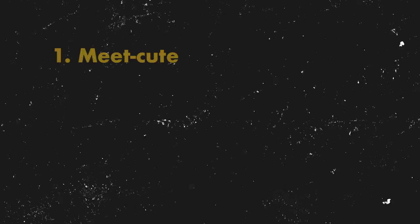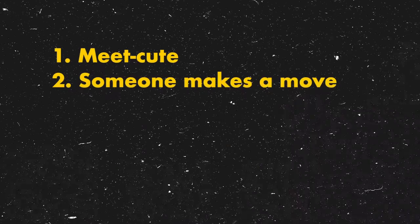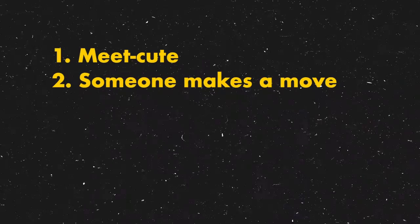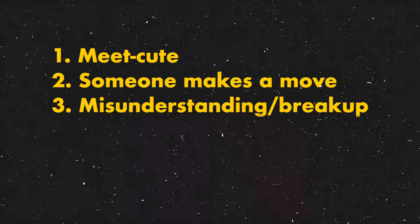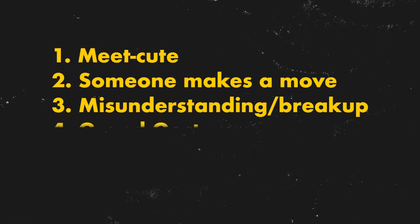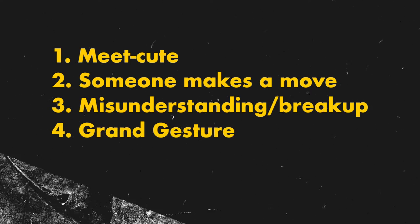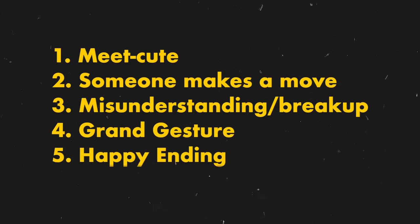Notting Hill was a romantic comedy released in 1999. Back then, there was a pretty standard structure for your average romantic comedy, and it looked something like this: there was the meet cute, one of them made a move, there was some sort of misunderstanding that drove the two lead characters apart, then came the reconciliation — often accompanied by a grand gesture — and that would lead us to the happy ending.